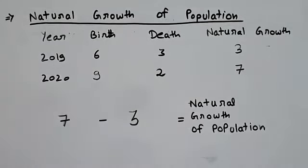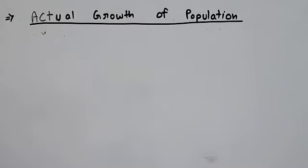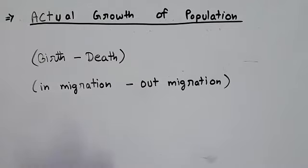Growth can't be measured only by birth and death because people also leave one region and others come in — migration affects population too. To find actual growth: (birth minus death) plus (in-migration minus out-migration). The result is actual growth of population.